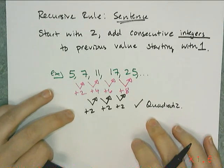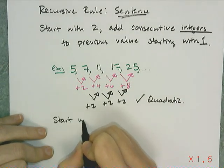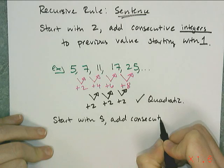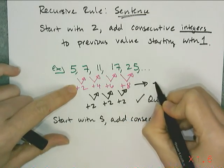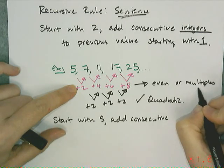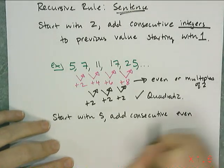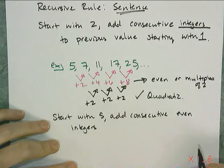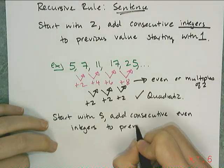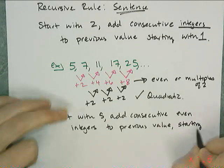Now if I want to write the recursive sentence for it, the recursive rule in sentence format, I'm going to say what I start with. I'm going to start with 5, and I'm going to add consecutive somethings. Now I just have to figure out what those somethings are. In this case, these are even, or you can think of them as multiples of 2. So I'm going to say consecutive even numbers or integers, or you can just say consecutive evens. I'm going to understand what you're saying. To the previous value. And I've got to say which one I start with. And I am starting with the 2.